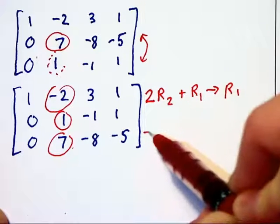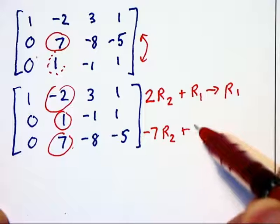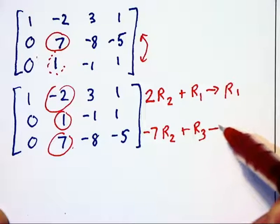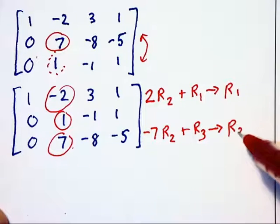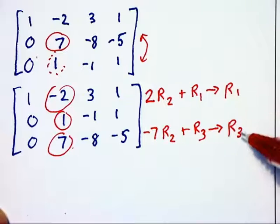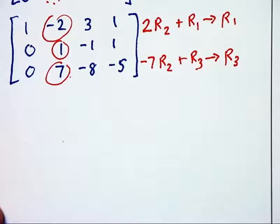add it to row 1 to replace row 1. And then we will take -7 row 2s, add it to row 3 to get the new row 3. So notice that row 1 and row 3 are going to be changing, but row 2 is not going to be changing again.